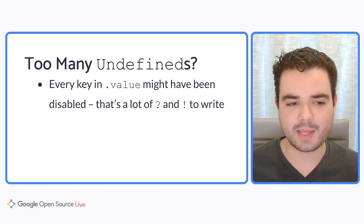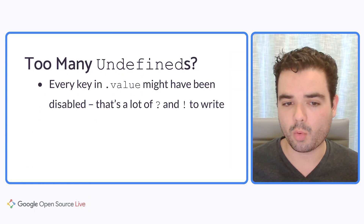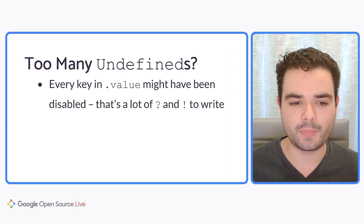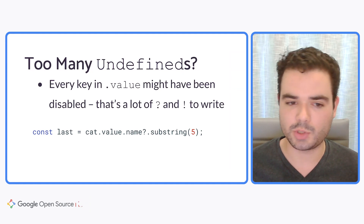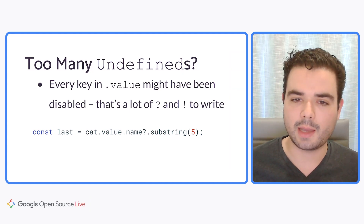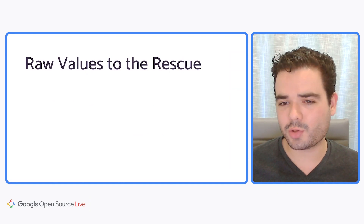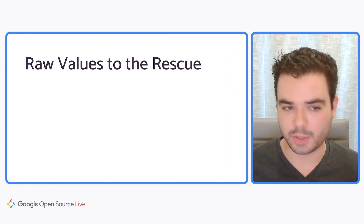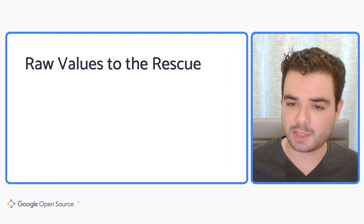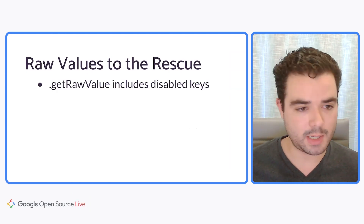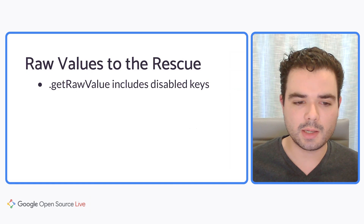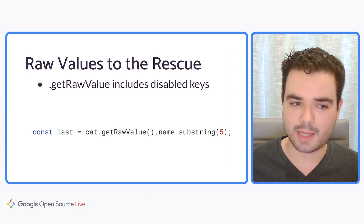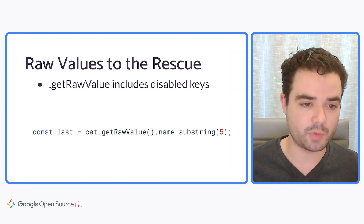When working with .value, every key could be undefined — you might have to use the question mark or exclamation point operators to navigate those undefineds. For example, name with a question mark to ensure it's not undefined, followed by .substring. You should consider whether you really need that level of detail about whether the control is disabled. Most use cases probably don't. If you choose getRawValue instead, the result will include all the disabled keys, so you don't need optional chaining anymore. For many use cases, .getRawValue is actually a better and safer choice than .value.